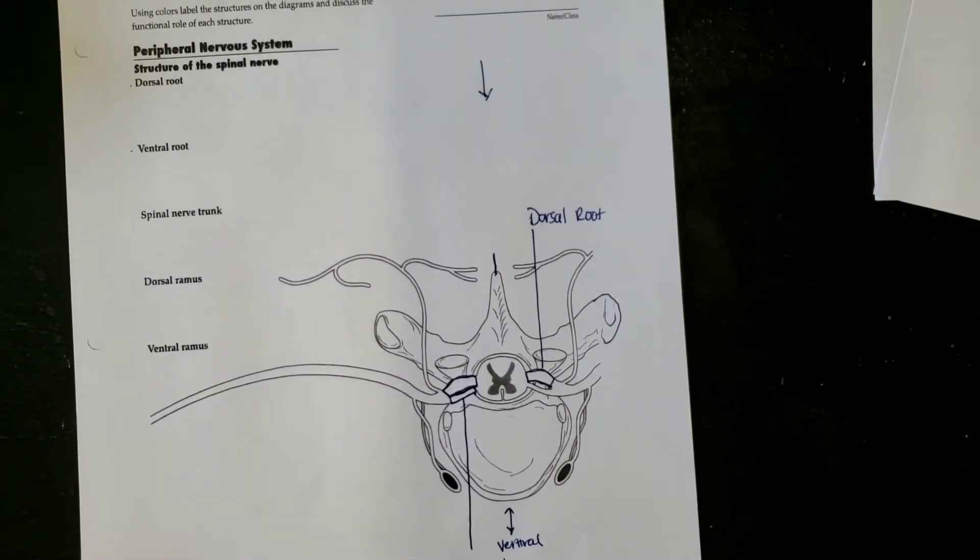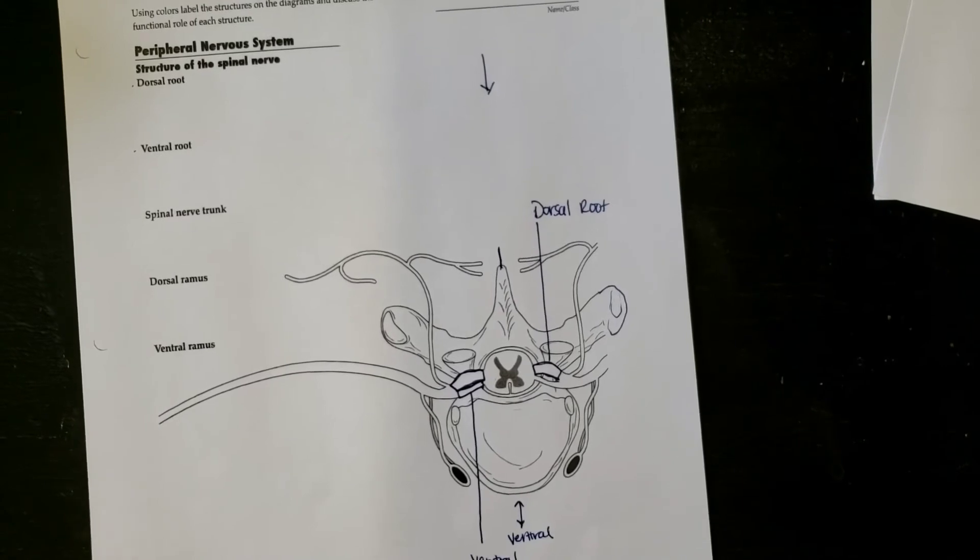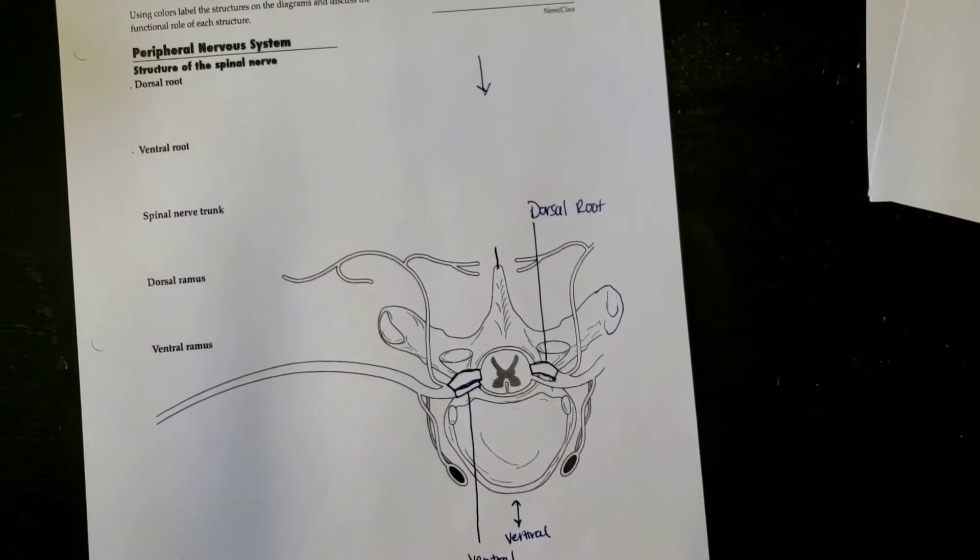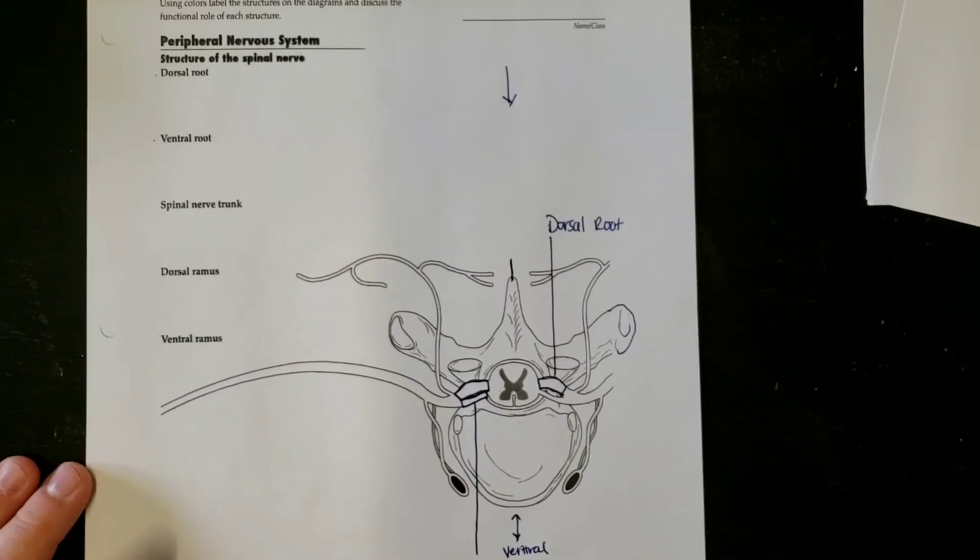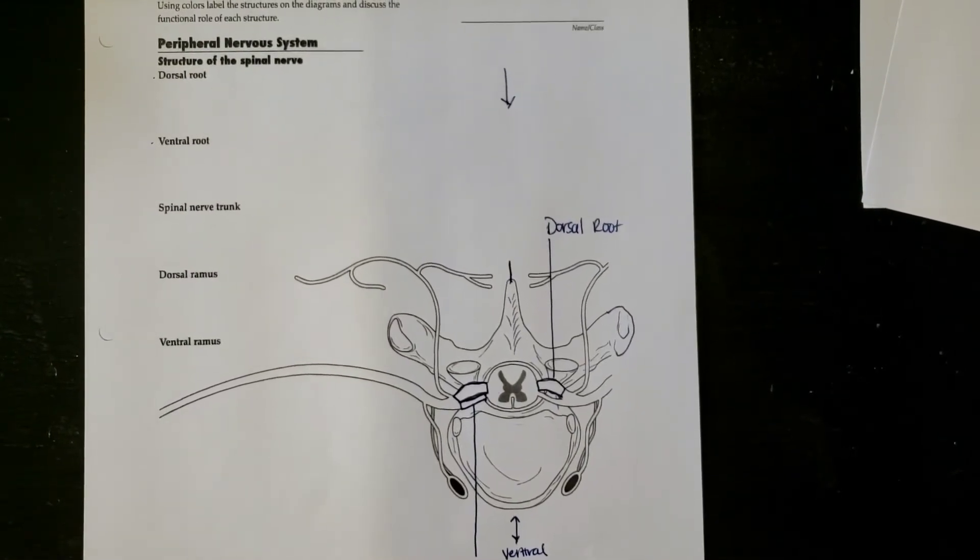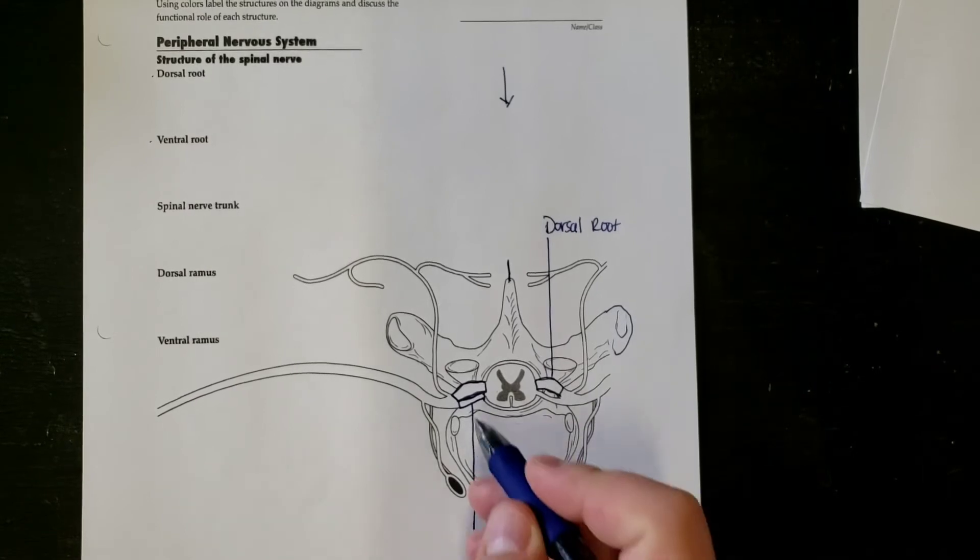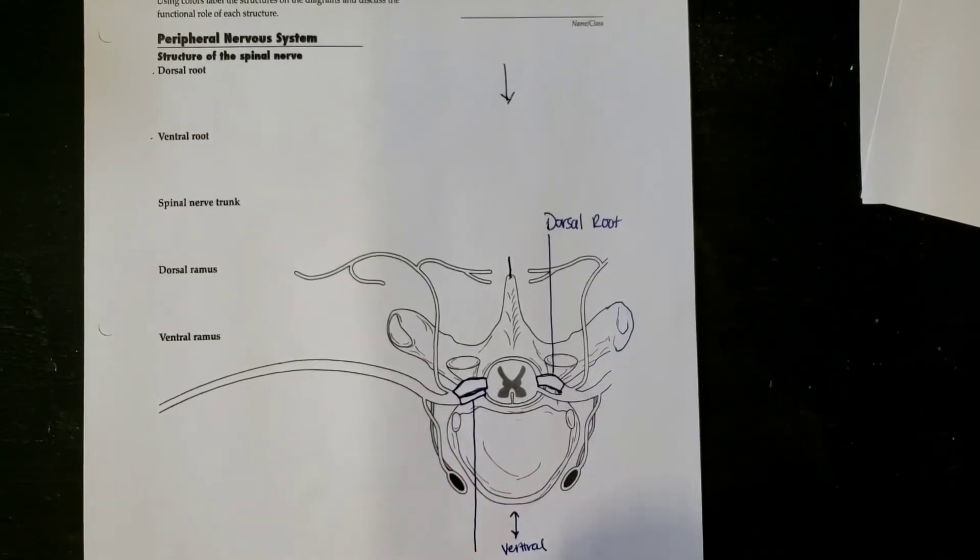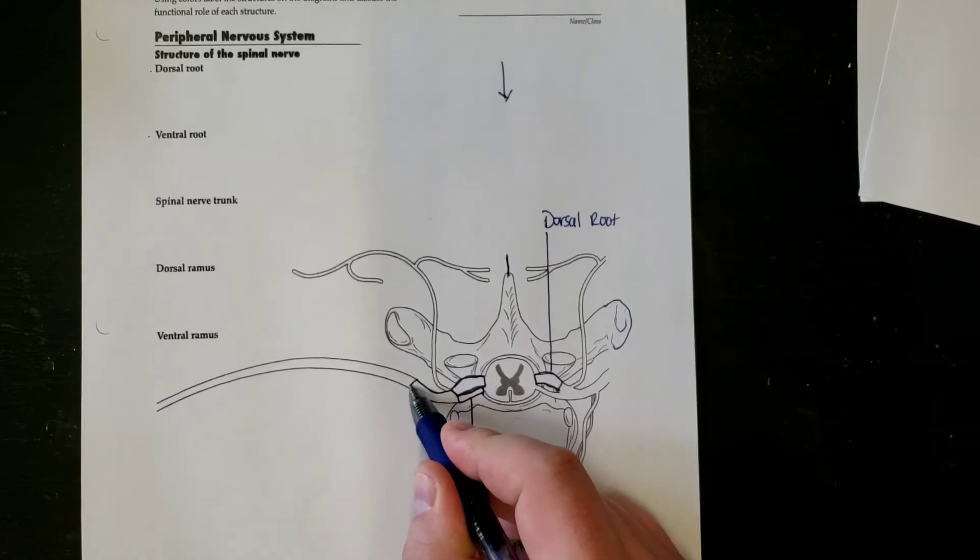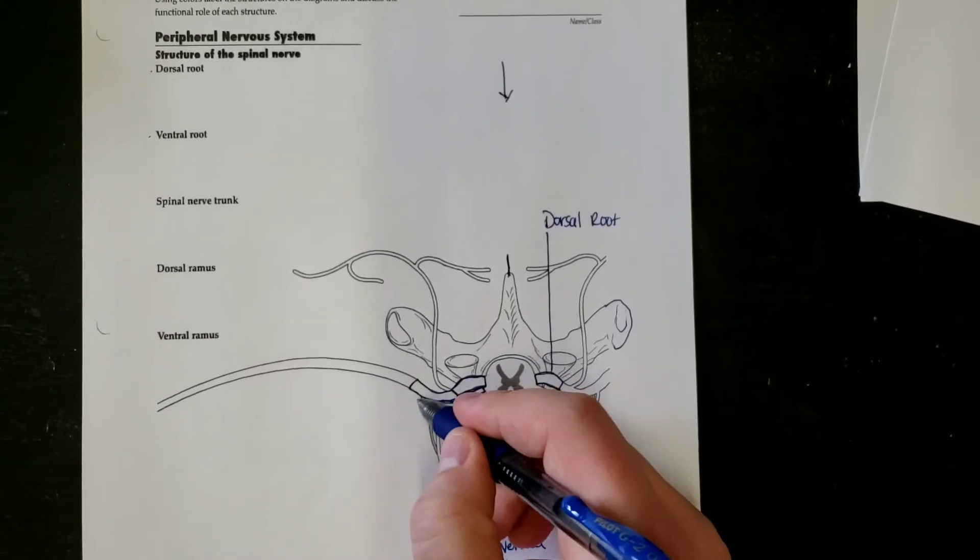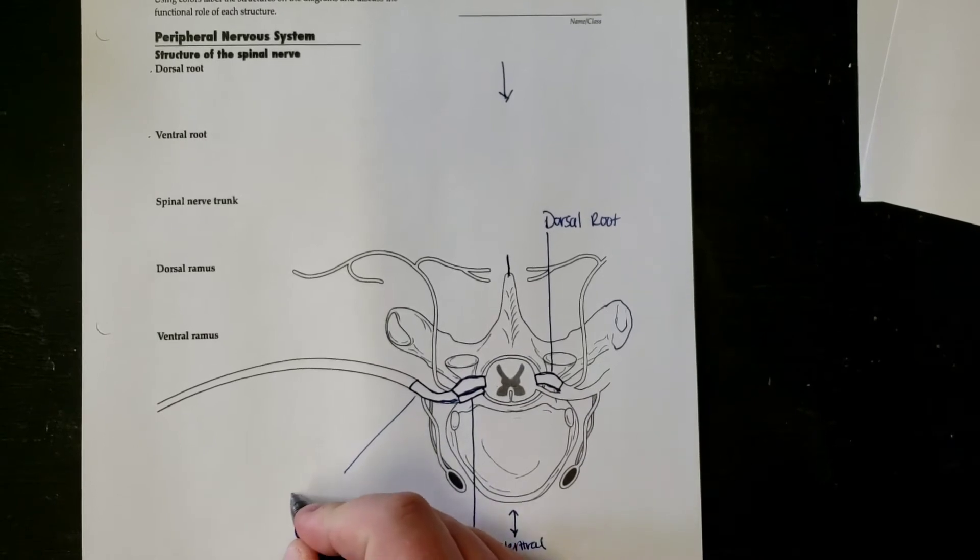Okay, the spinal nerve trunk is where these two, the dorsal roots and ventral roots, where they're going to meet together. This is where you're going to be calling the spinal nerve trunk.